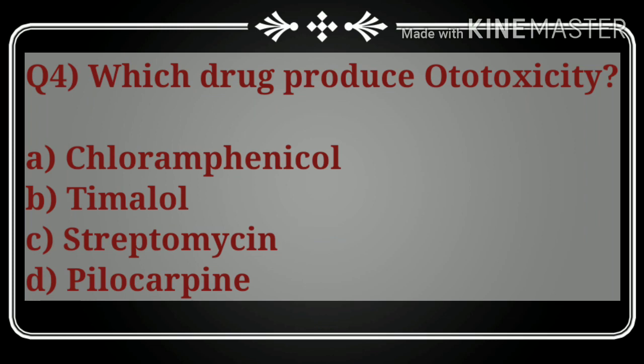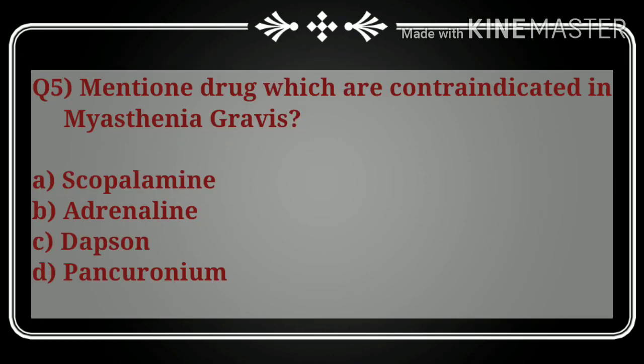Question number five: mention the drug which is contraindicated in myasthenia gravis. The options are: A) scopolamine, B) adrenaline, C) dapsone, and D) pancuronium. The correct answer is option D, pancuronium. Pancuronium is the drug which is contraindicated in myasthenia gravis disease.